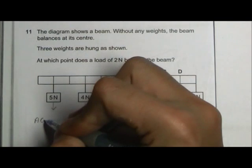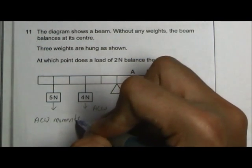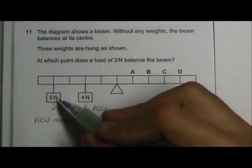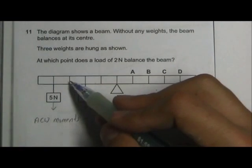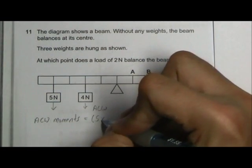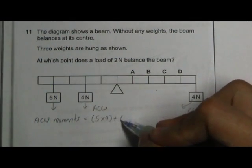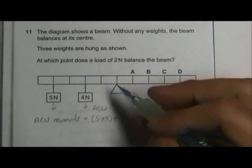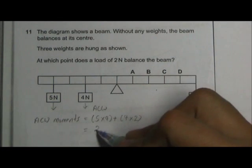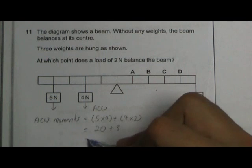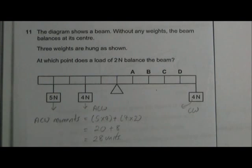So the total anti-clockwise moment is equal to... We have 5N times 1, 2, 3, 4 units of length, so it will be 5 times 4. And we have 4N here, so 4 times 1, 2, 2 units of length. So total we have 20 plus 8, which is 28 units of anti-clockwise moments.